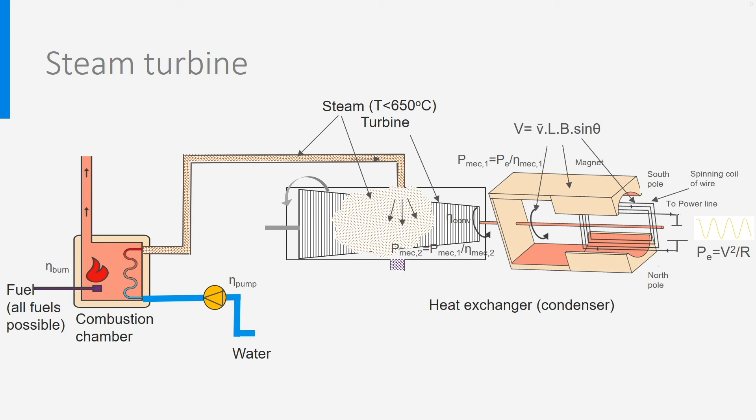Let's look at their efficiency now. The efficiency of the boiler is high, as usual, around 0.96. As the turbine is not connected to a compressor, but only to the generator, we could expect it to have a higher efficiency, eta-conv, than the gas turbine. However, the temperature of the steam, and therefore the energy it contains, is much less than in a gas turbine.